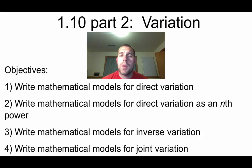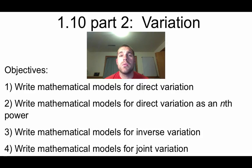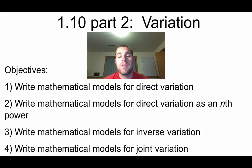Hey guys, Mr. Bakkerberg here. Part 2 of Lesson 1.10 is all about different kinds of variation. There are four types of variation we're going to talk about. First, we'll use direct variation to write a mathematical model. Second, we'll use direct variation as an nth power. Third, we'll use inverse variation. And lastly, we'll look at joint variation.